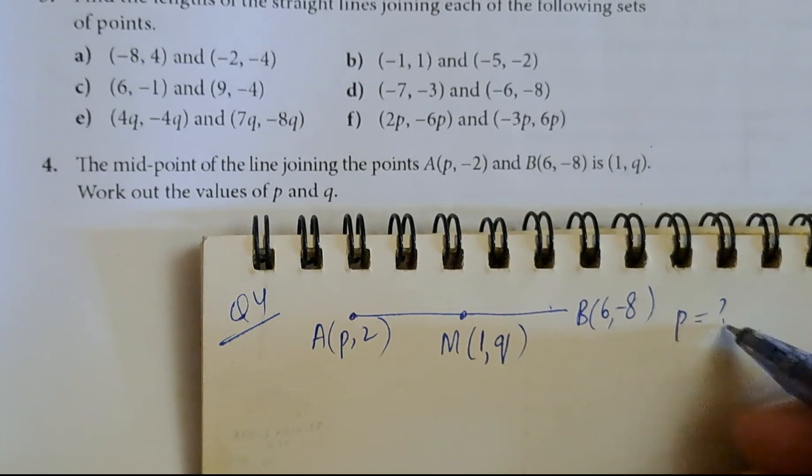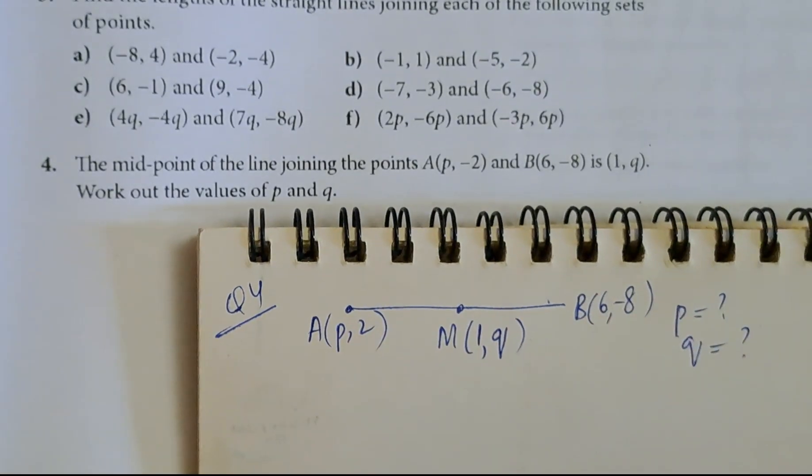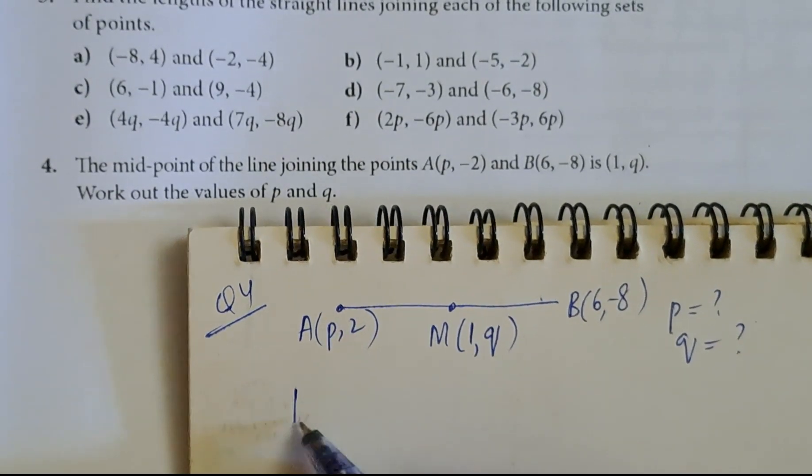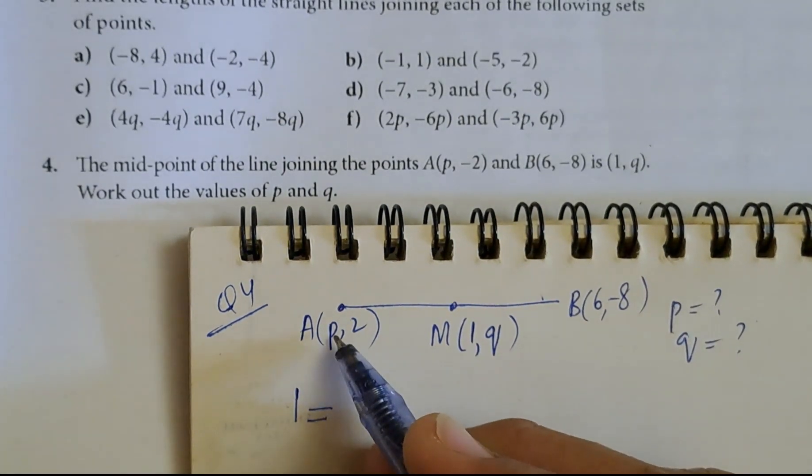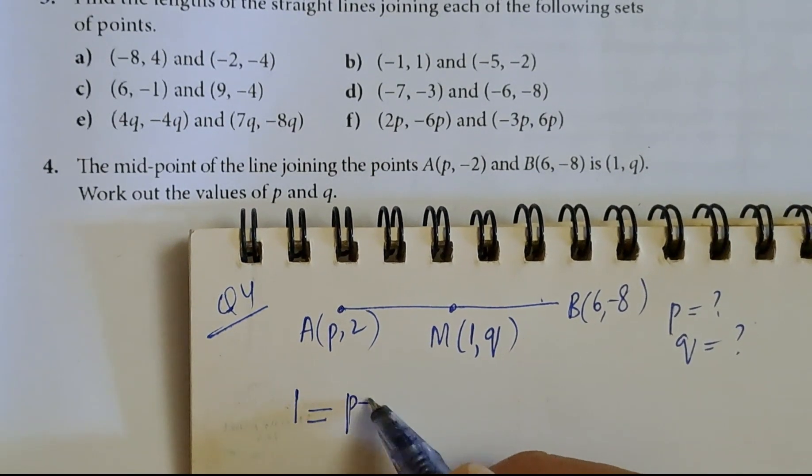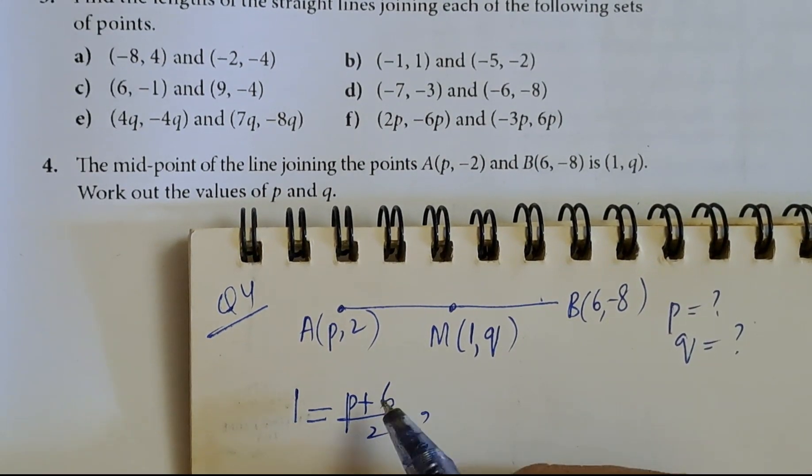So we have p and q to find. What is the midpoint formula? 1 equals p plus 6 upon 2. Is it correct? It is correct.